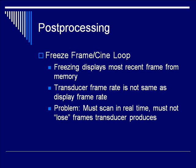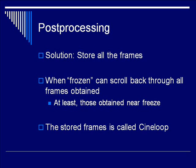Remember, the transducer frame rate is not the same as the display frame rate. Our transducer is taking pictures faster than our TV can display. The problem is that we need to scan in real time — I want to still be able to see the most current image on screen, but I also don't want to lose those frames the transducer is producing, because one of those frames might be the one I really need. The solution is the CineLoop. We store all the frames, and whenever you hit Freeze, you can scroll back through the most recent frames obtained. The stored frames are the CineLoop, and that is a post-processor function.